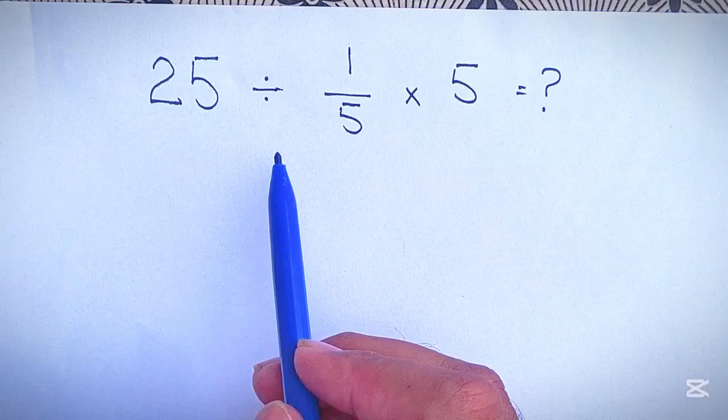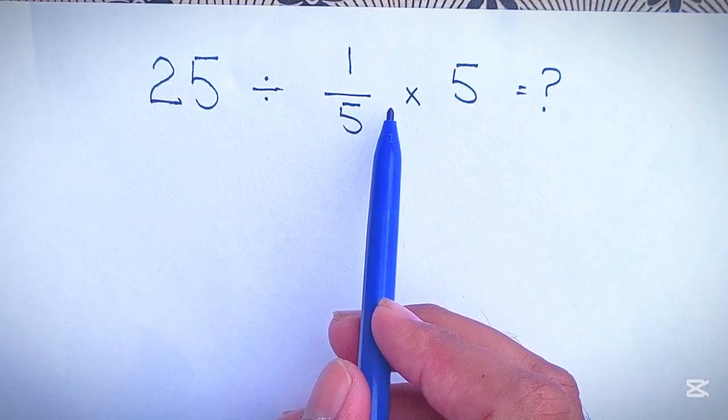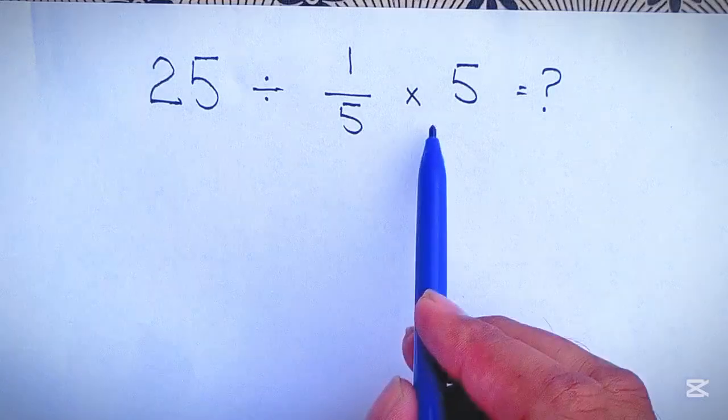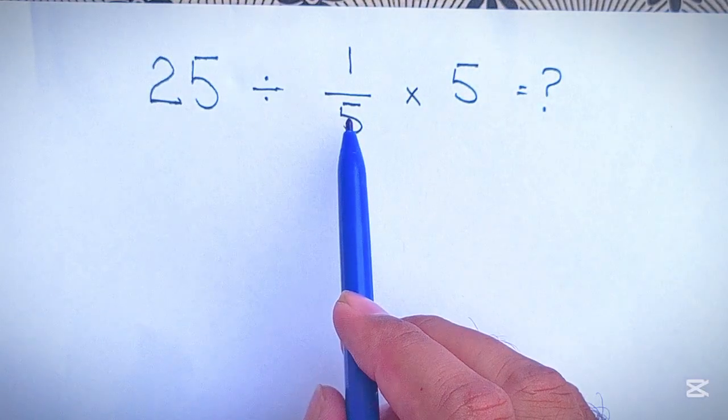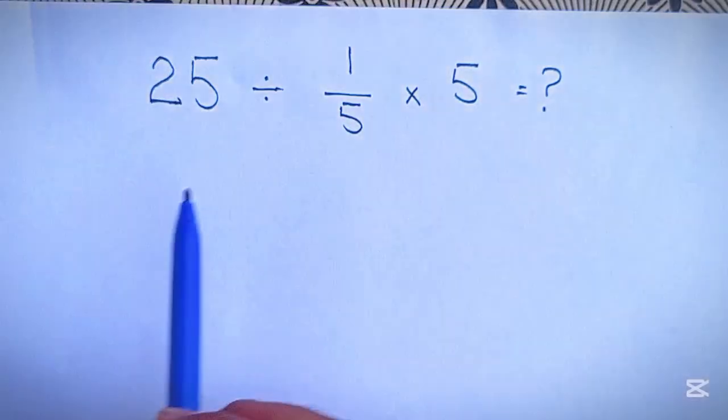According to the order of operation which is PEMDAS, multiplication and division have equal priority and we have to work from left to right. So here we have 25 divided by 1 over 5.